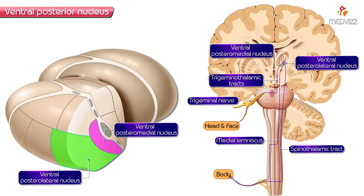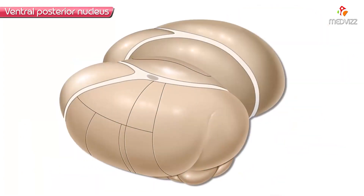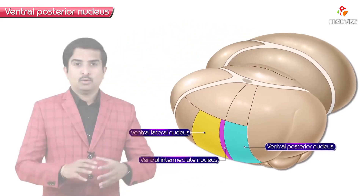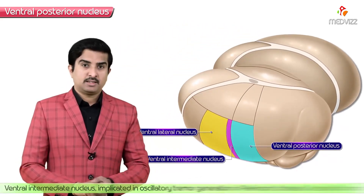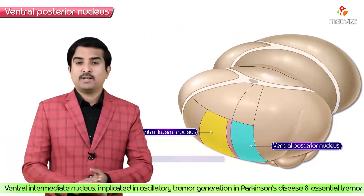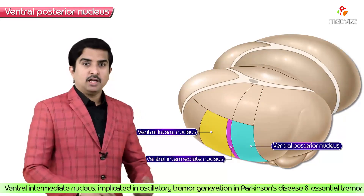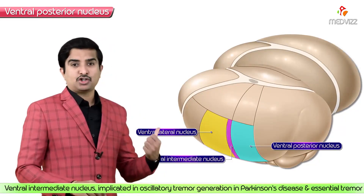The ventral posteromedial nucleus of the thalamus receives sensory information from the head and face by means of the trigeminal nerve. Between the ventral lateral nucleus and the ventral posterior nucleus, there is a small nucleus called the ventral intermediate nucleus.